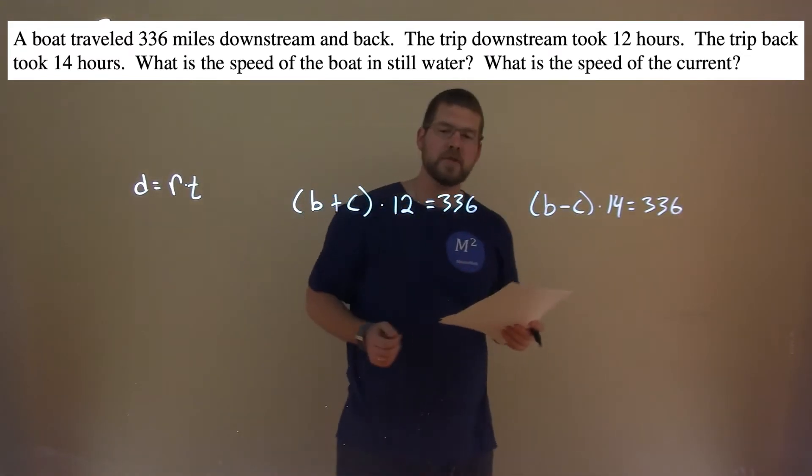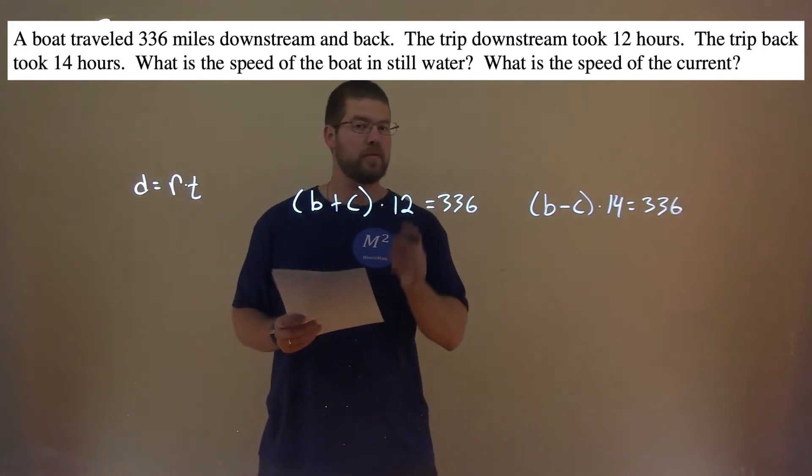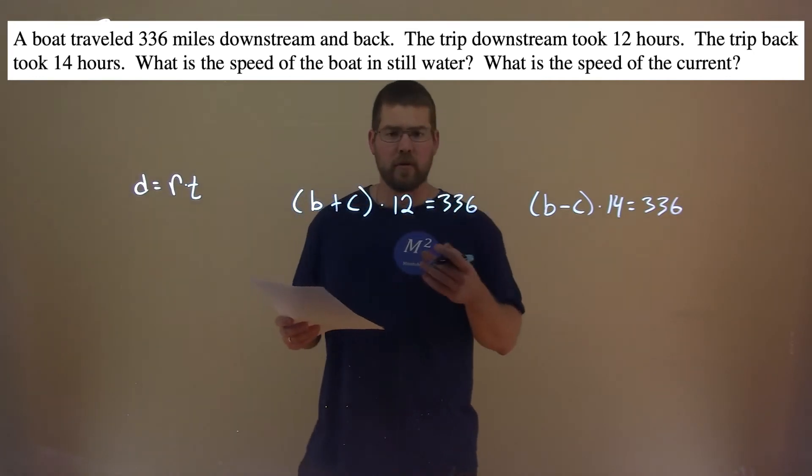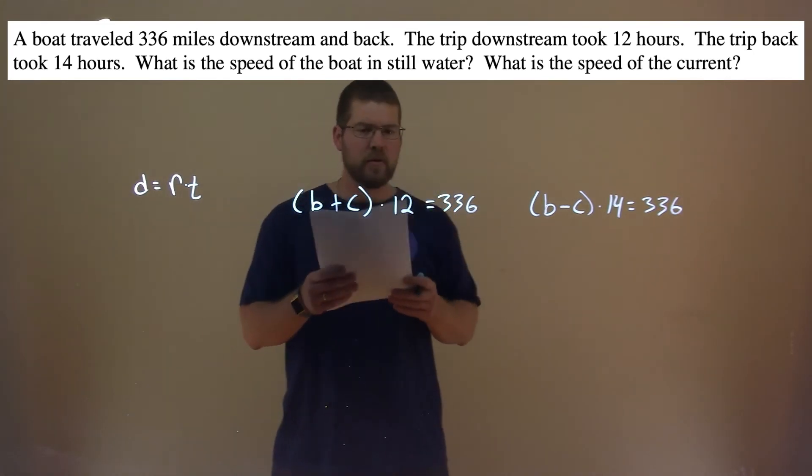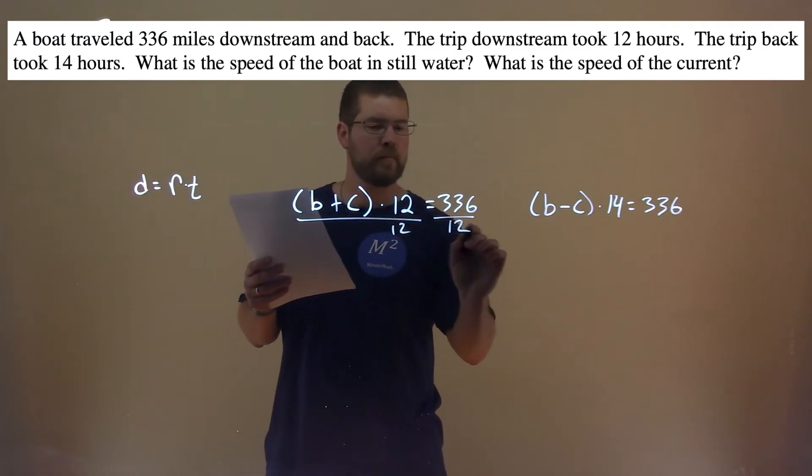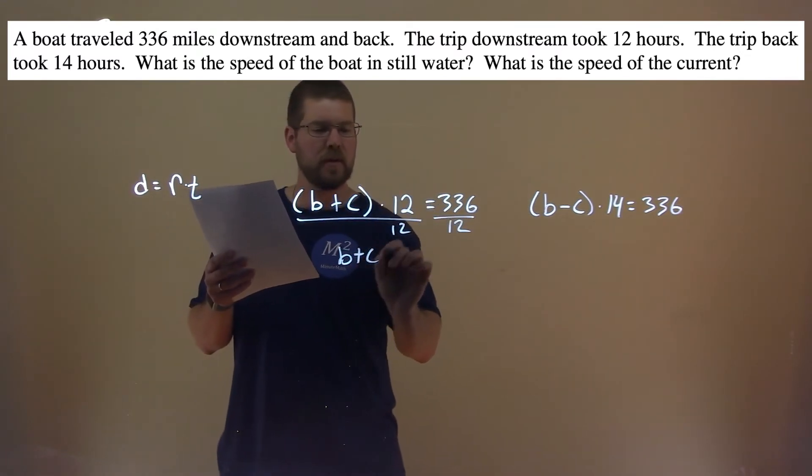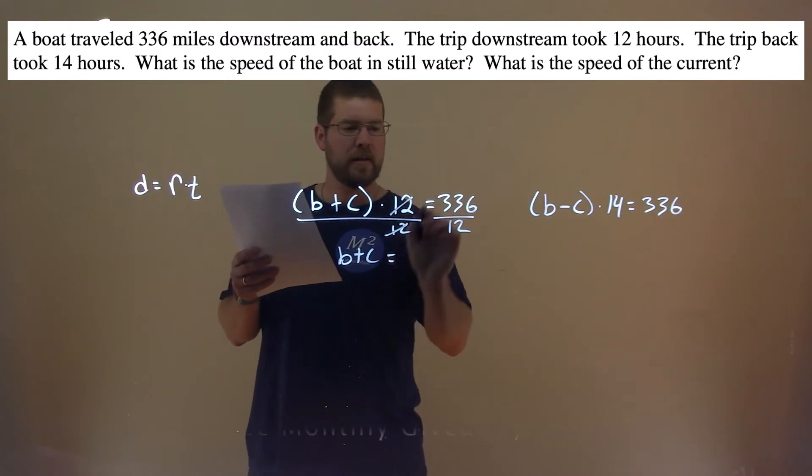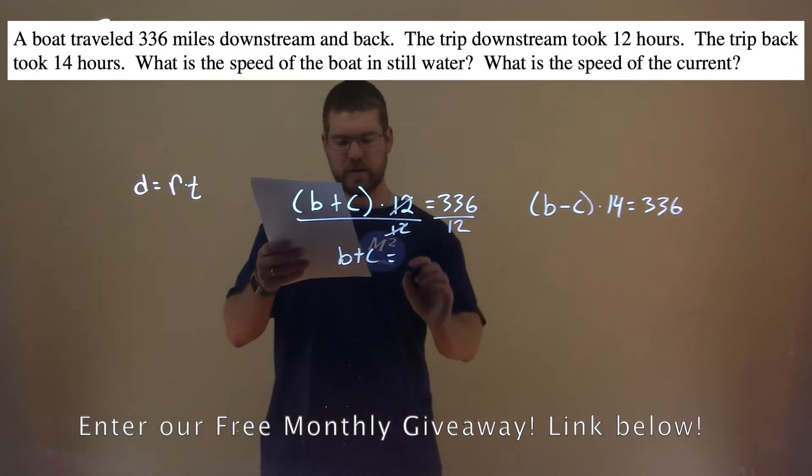We now have two equations, right, each one with two variables. We'll solve for our variables. So what I'm going to do is try to get rid of this excess thing. I'm going to divide both sides here by 12. Make it a little simpler, and B plus C, the 12 cancels, and 336 divided by 12 is 28.